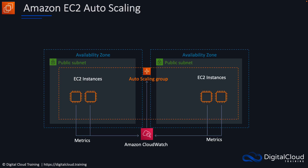EC2 auto scaling is the one we'll concentrate on the most. With EC2 auto scaling, we have instances running and we've created an auto scaling group, where we define a desired count for how many instances we actually want to run. It works with CloudWatch, the performance monitoring service, to validate what the resource utilization is. These instances are constantly sending metrics to CloudWatch indicating how much resource is being utilized.